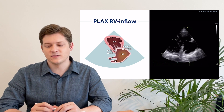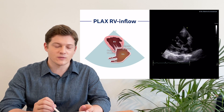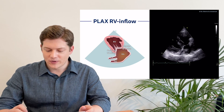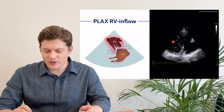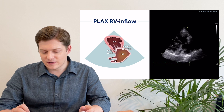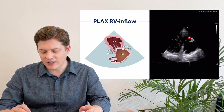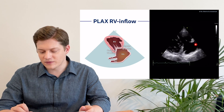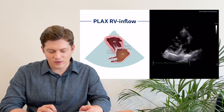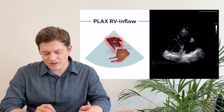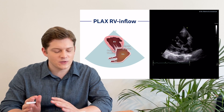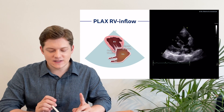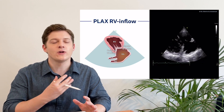If you tilt the transducer in that direction, you will get a nice view of the right ventricle. You can see the cavity of the right ventricle in this B-mode image. Don't get confused — this is the left ventricle and this is the right ventricle. We are now focusing on the right heart structures. This is the tricuspid valve, and this is the right atrium. Importantly, from a transthoracic approach, this is the only view where this differentiation is possible.